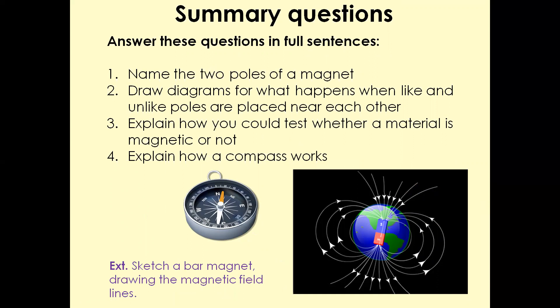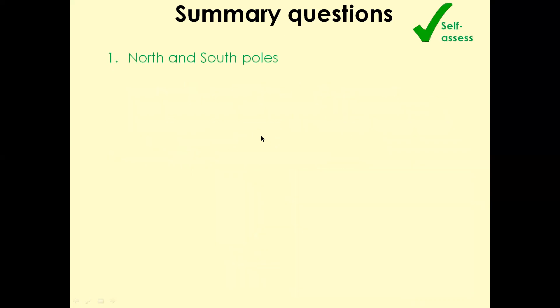Let's mark the answers. The first question was name the two poles of a magnet. Draw diagrams for what happens when like and unlike poles are placed near each other. Explain how you could test whether a material is magnetic or not. Explain how a compass works. Just have a look at the answers. Name two poles, that's north and south.